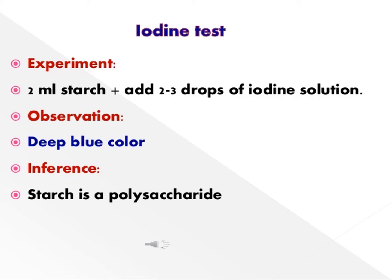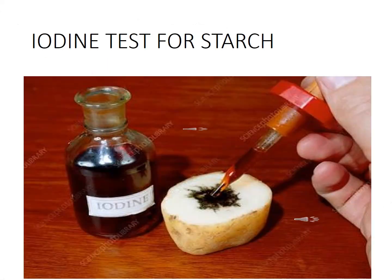In the experiment, we add 2 ml of starch solution, then we add 2 to 3 drops of iodine solution, which is a brown-orange color. The result we observe is that a deep blue color appears. As you can see in the next slide, when I add 2 to 3 drops of iodine solution on potato, it turns deep blue — confirming that potato contains starch.